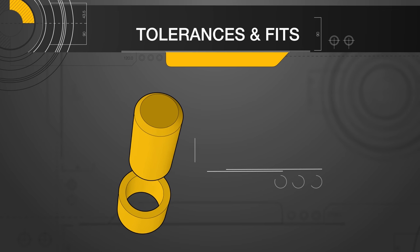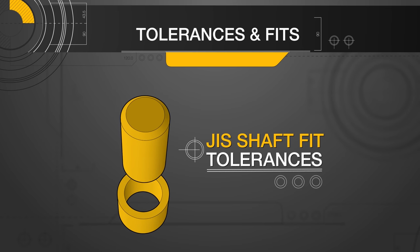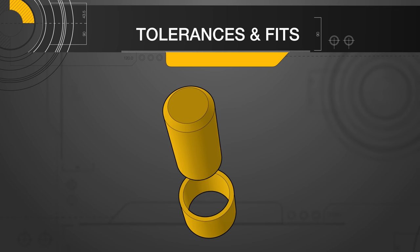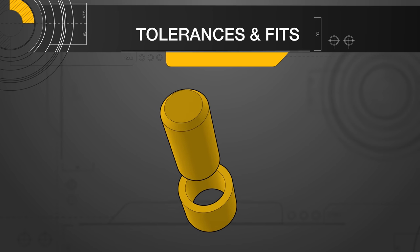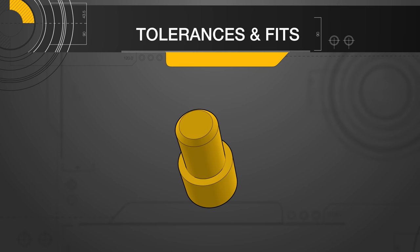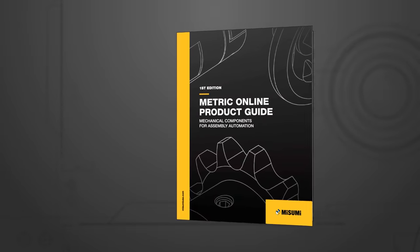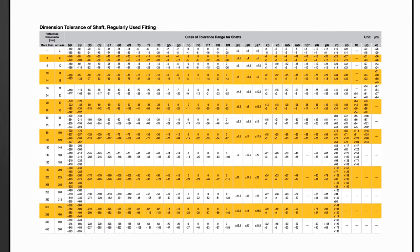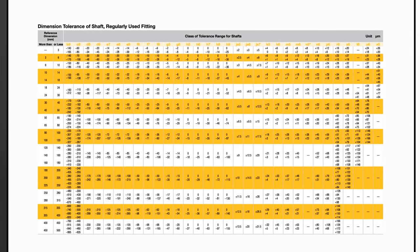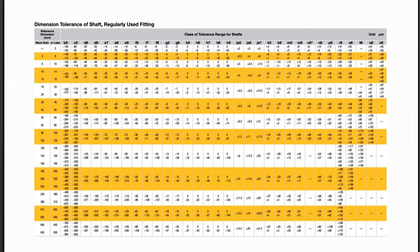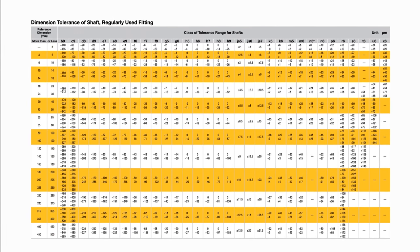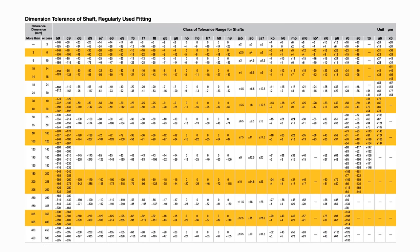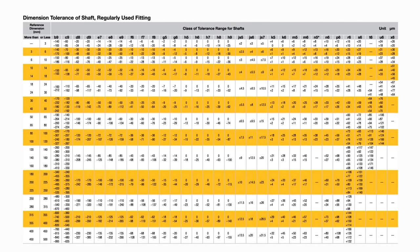Misumi shafts and bores follow the JIS shaft fit tolerances. Selecting the proper tolerance is critical to achieve the desired fit between two mating components. This tolerance table can be found in the technical reference section in each catalog. The columns represent the tolerance grade, while the rows are organized by diameter ranges. Finding where the two intersect will indicate the corresponding tolerance range.